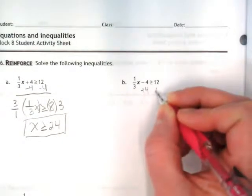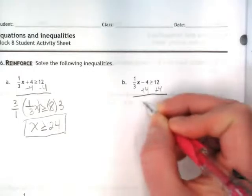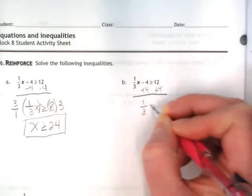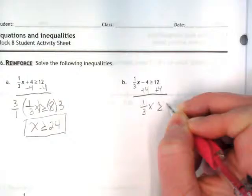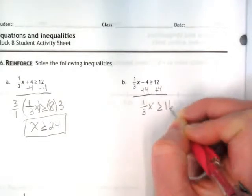And if I do it on the left side of the inequality, I also have to do it on the right. That's, again, leaving me with 1 third x is greater than or equal to, this time I'm getting 16.